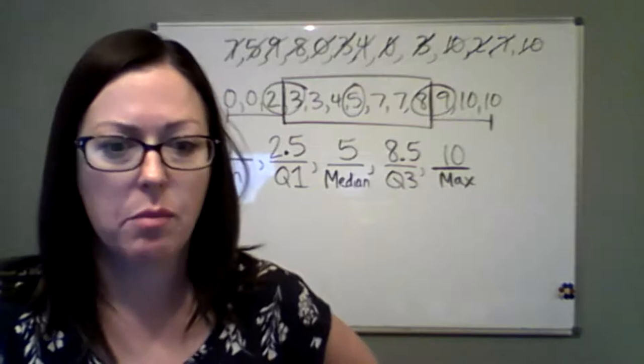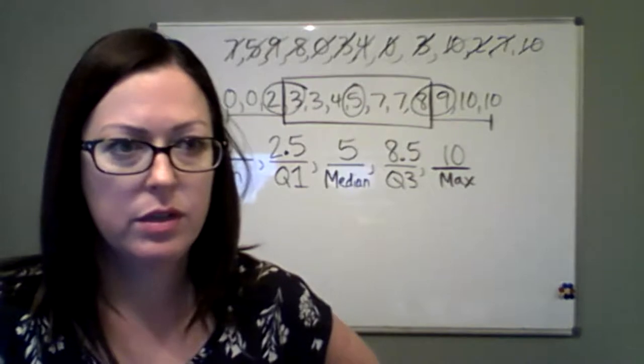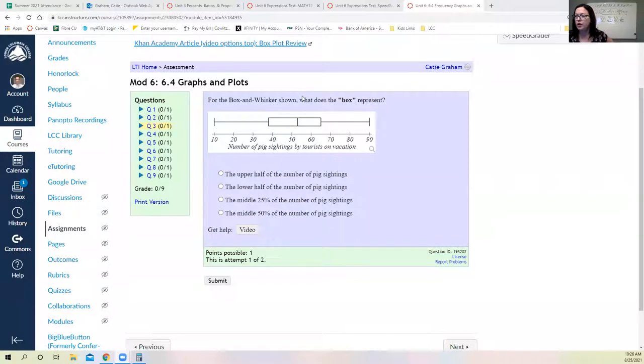Okay. So I want us to look at a box plot and see, so I'm going to share my screen. All right. So if we look at this, what does the box represent? We're looking at here and here's our whiskers going out. Does the box here represent the upper half of the number of pig sightings? I don't know where pig sightings came from. The lower half of the number of pig sightings, the middle 25% of pig sightings or the middle 50% of pig sightings? It is the middle 50%, you bet, because if we look here at the whisker represents the first 25%. The box is the next 25% and then the second, the third 25% for a total of 50% and then a quarter, the final quarter above it. So excellent.